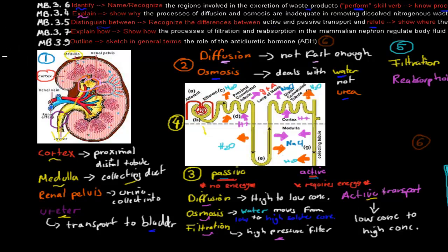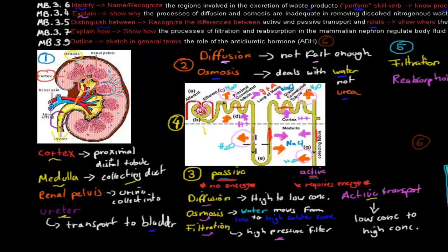You also need to know where these processes occur. Diffusion and osmosis happen throughout the nephron. Osmosis especially occurs at the proximal and distal tubule, the lower part of the loop of Henle, and the collecting duct. Filtration occurs at the glomerulus. Active transport occurs at the distal tubule, proximal tubule, collecting duct, and ascending loop of Henle. The active transport locations are the ones in pink on the diagram; the passive processes occur all over the kidney.